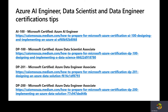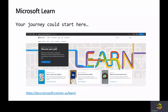We're talking about four certifications, and it will take you some months to achieve all of them. Start with AI-100, then DP-100, then DP-201 and DP-200. If you're a data engineer, just go directly to DP-200 and DP-201. You don't have to follow any strict guidance from me — you can do whatever certification works best for you.